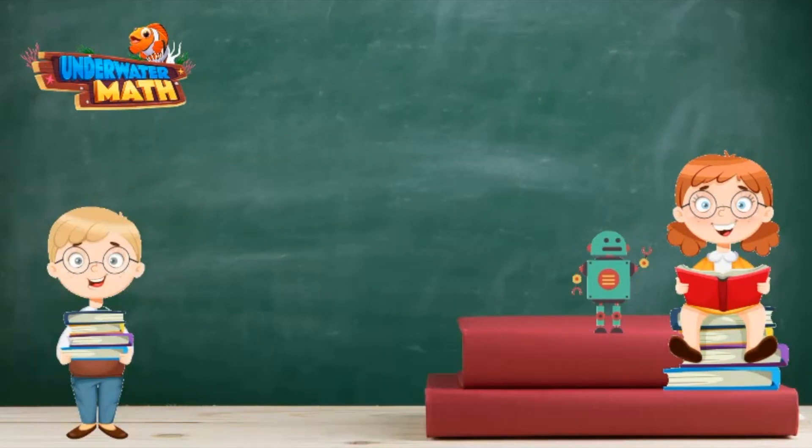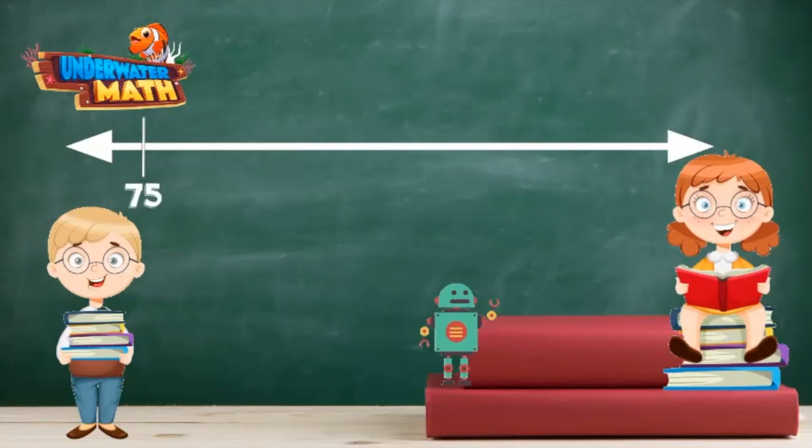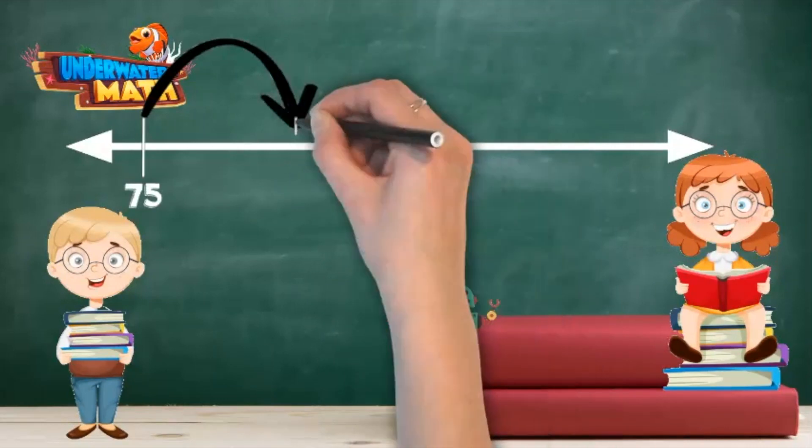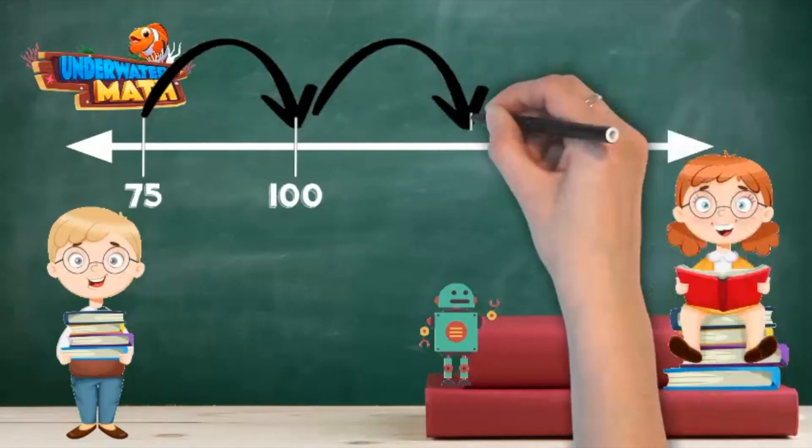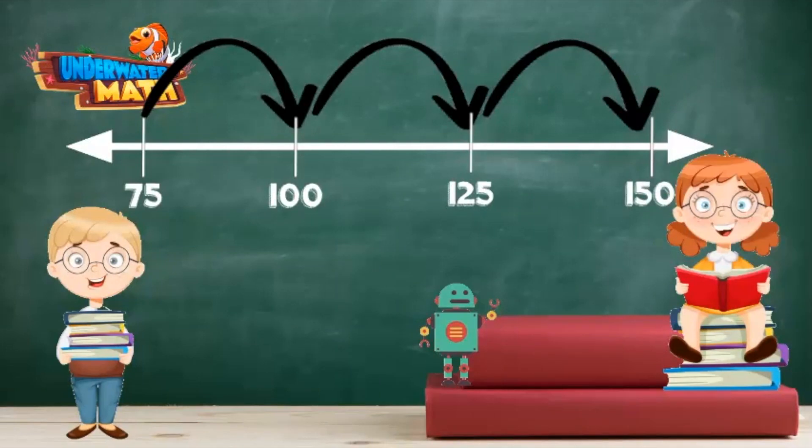try another one. This time our number line starts where we left off at 75. Next up is 100, then 125, then 150. Again, our numbers end in either five or zero. Colin, I have a pile of quarters from